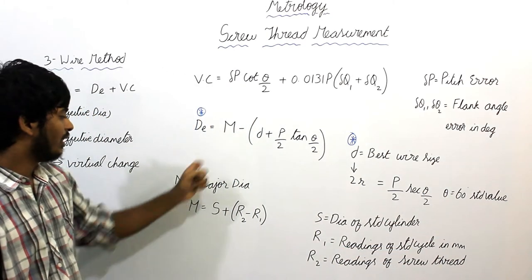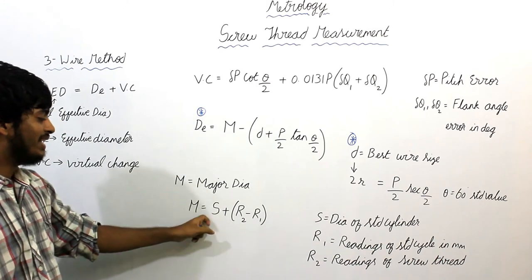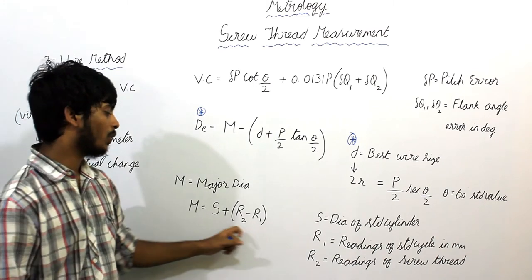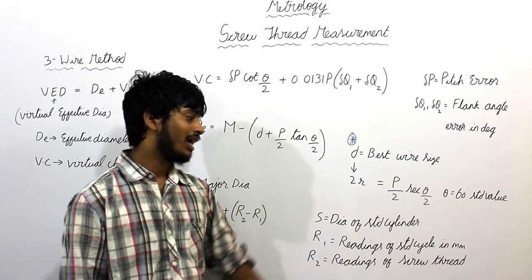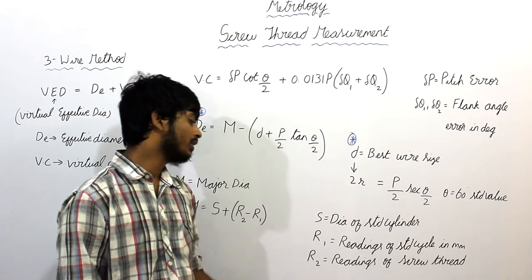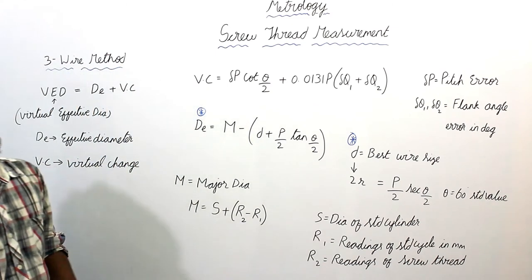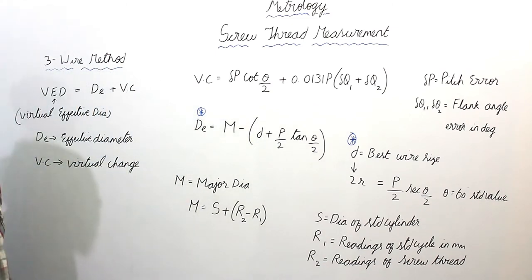And this M is major diameter. It is given as S plus R2 minus R1, where S is diameter of standard cylinder, R1 is reading of standard cycle and R2 is reading of screw thread in mm. Both are in mm.